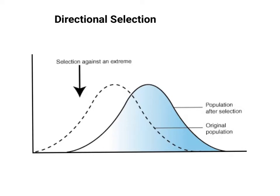So in directional selection, nature is selecting against the other extreme as well as the middle trait.